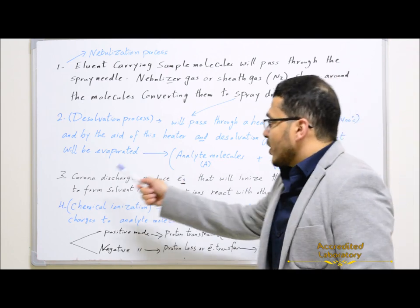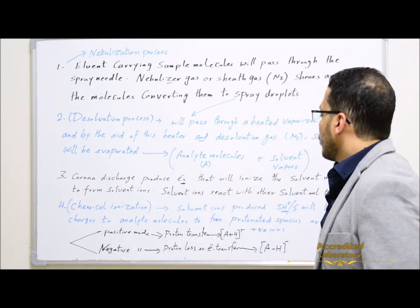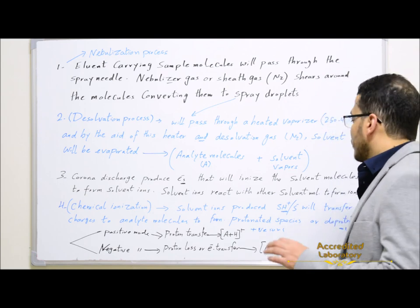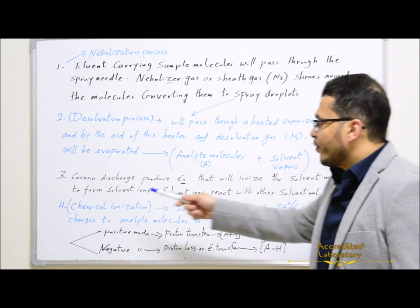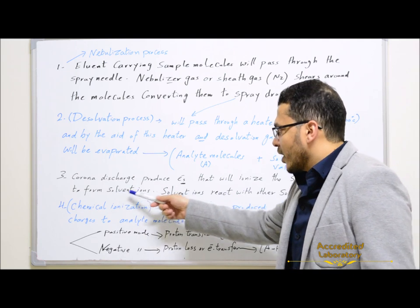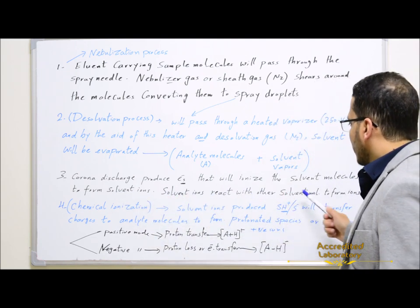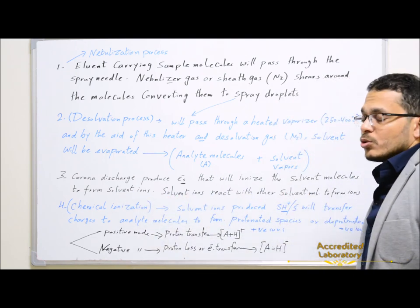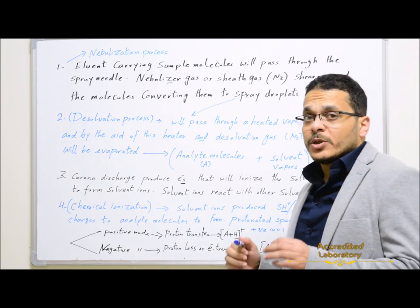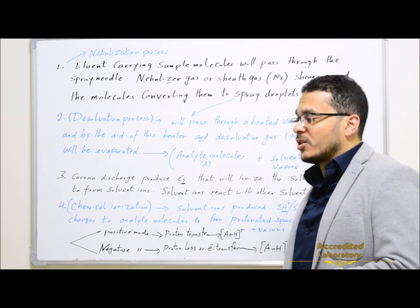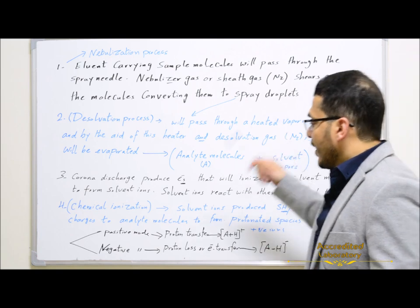Corona DC discharge produces electrons that will make ionization for the solvent molecules to form solvent ions. Solvent ions then react with other solvent molecules to form more ions, so solvent molecules should be present in higher concentration than analyte molecules.